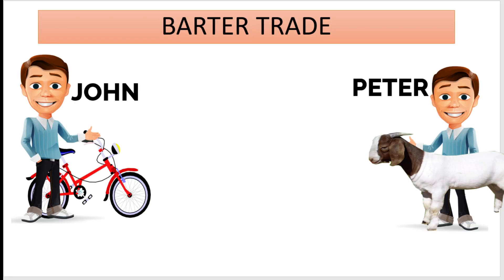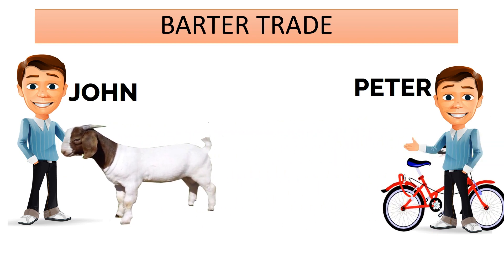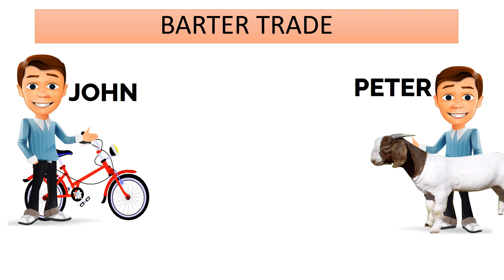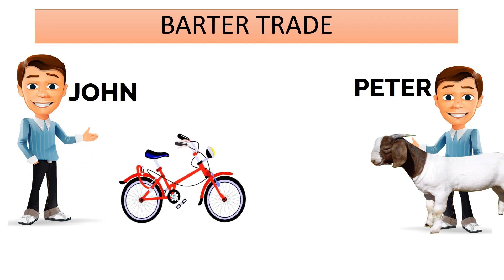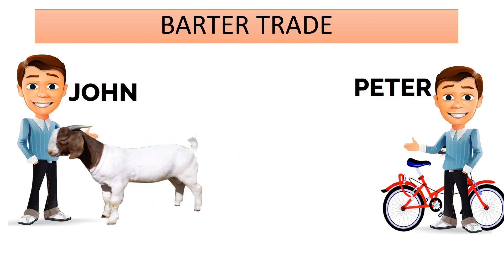For example, John has a bicycle, however he does not need it. He prefers a goat instead. Peter has a goat but he needs a bicycle. The two gentlemen can exchange goods. This means that John will give Peter the bicycle, and in return he receives a goat. As you can see there is no money involved. John used his bicycle to buy a goat, and Peter used his goat to buy a bicycle. This is known as barter trade — that is, using goods to buy goods.